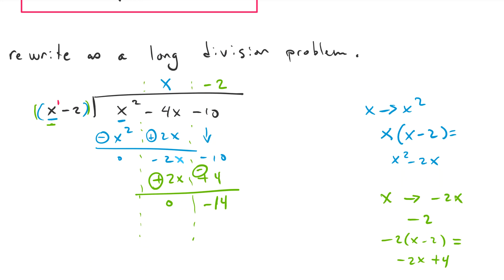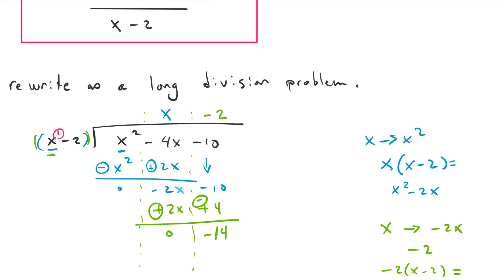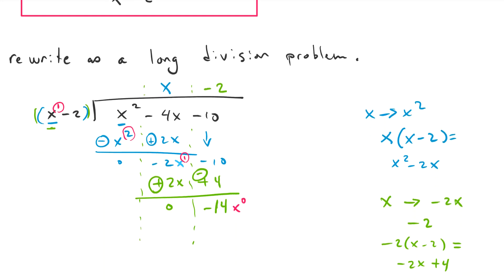We know we can stop when the highest exponent at the current step is 1 less than the highest exponent in the denominator. The highest exponent in the denominator is 1. The first step, our highest exponent was 2. Our next step, our highest exponent was 1. So now our current step, our highest exponent is actually 0. x to the 0 is just the same thing as 1, so it goes away. The exponent is 0, and 0 is less than 1, so we can stop. We're done. This is the remainder.